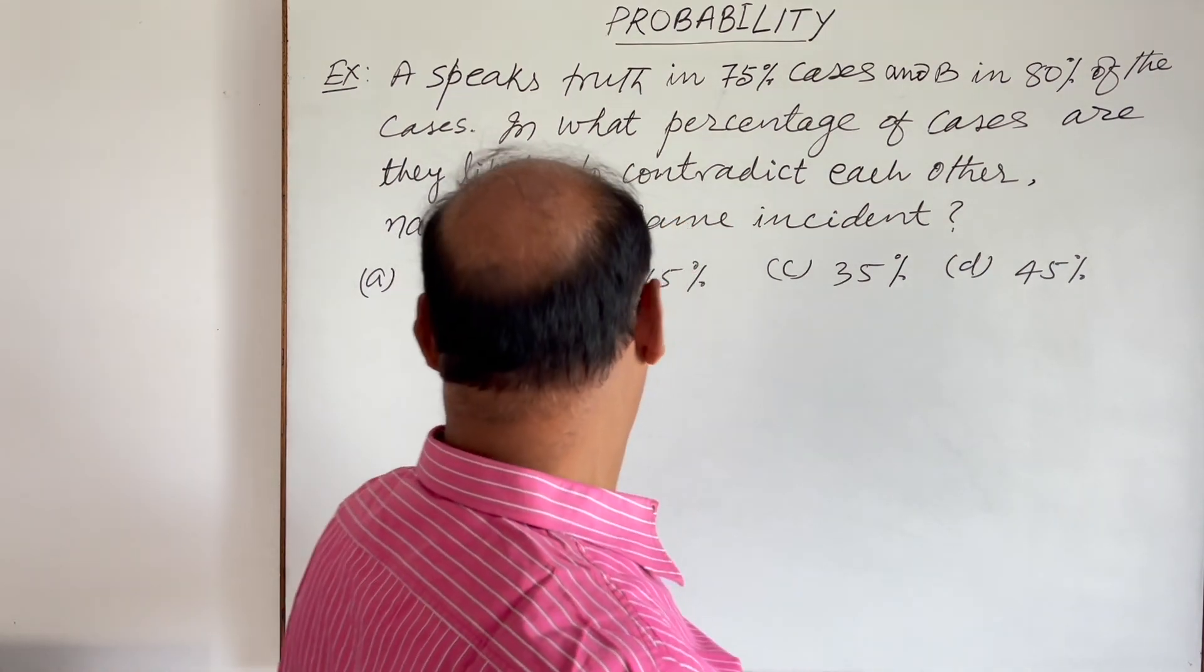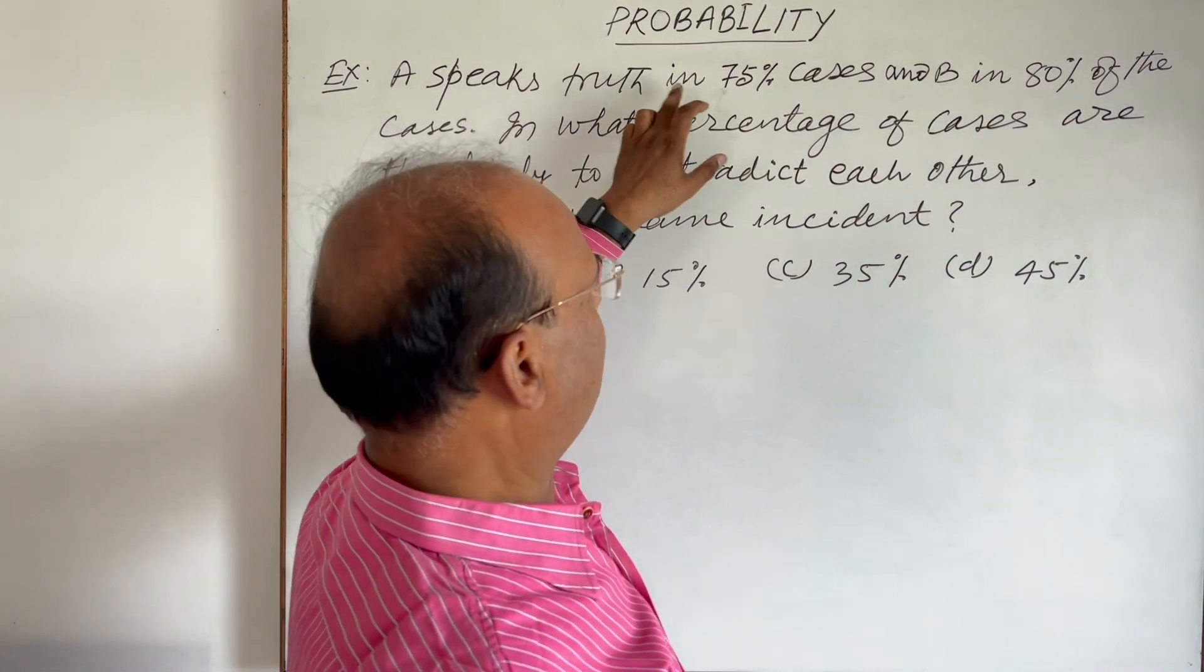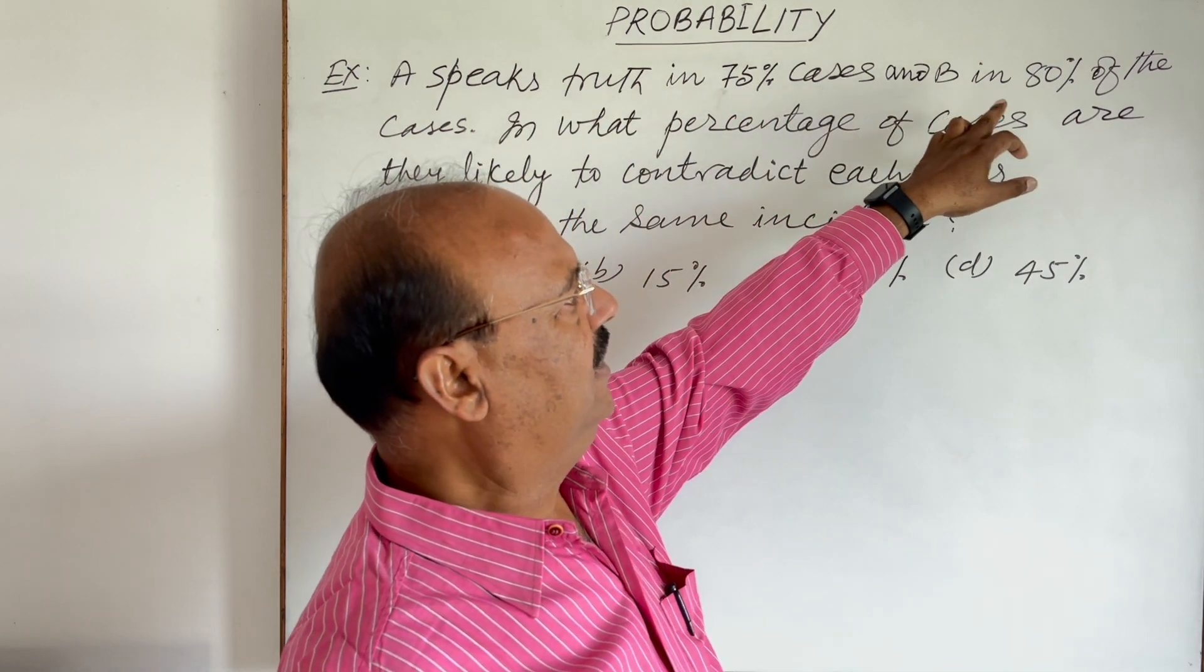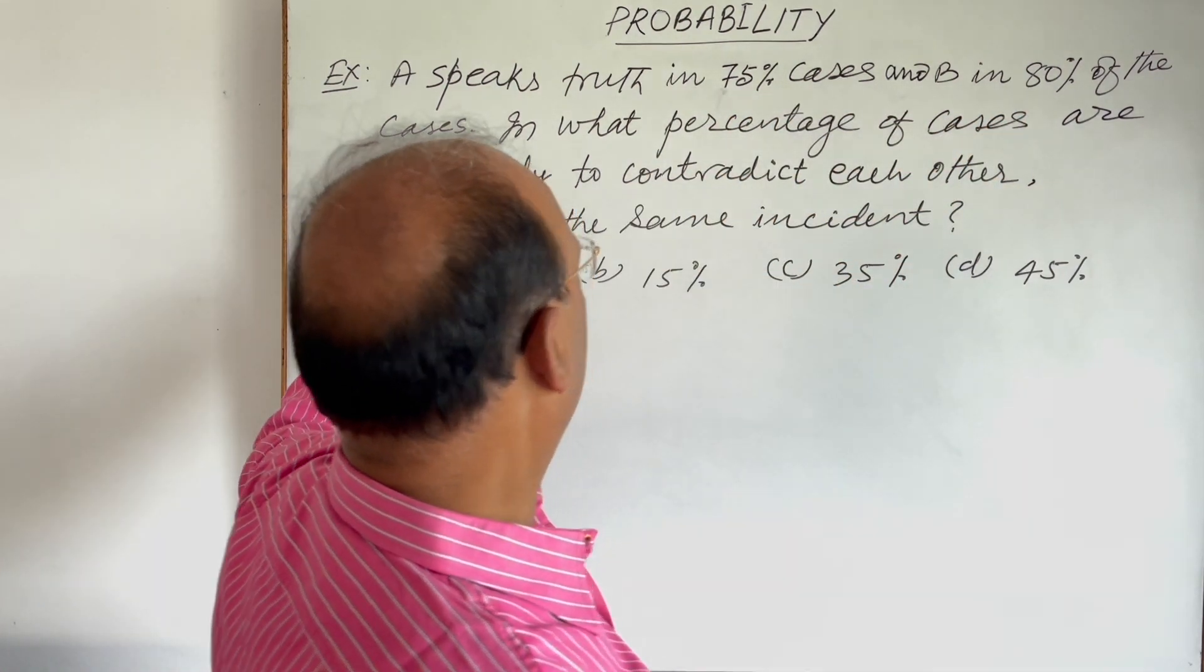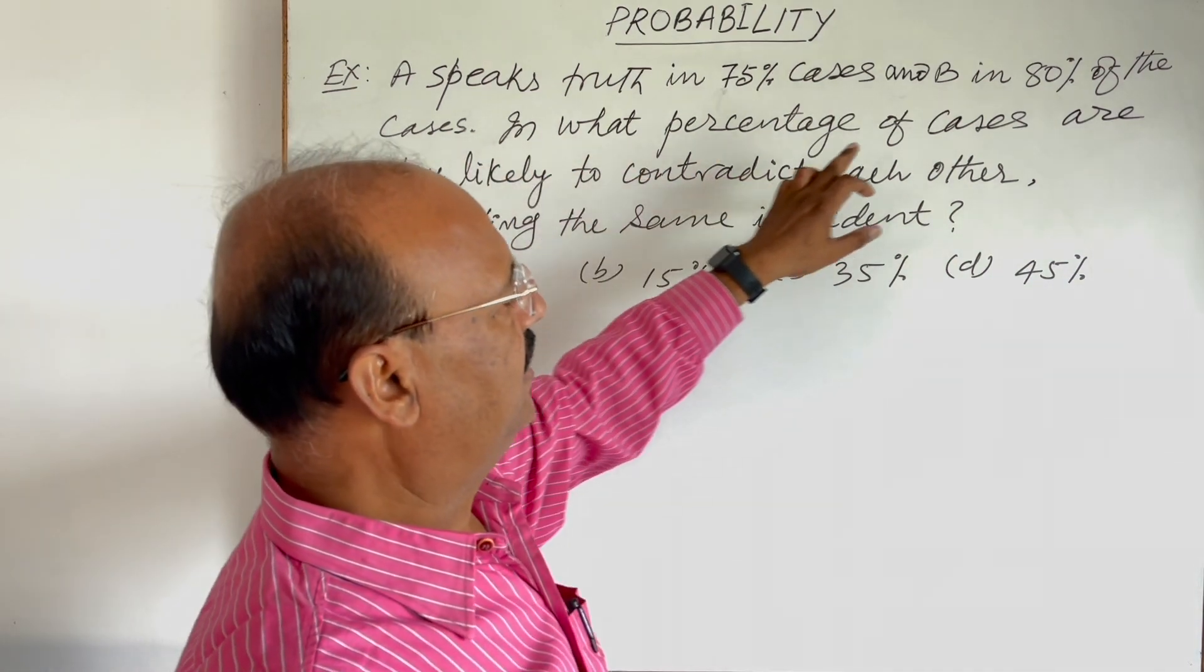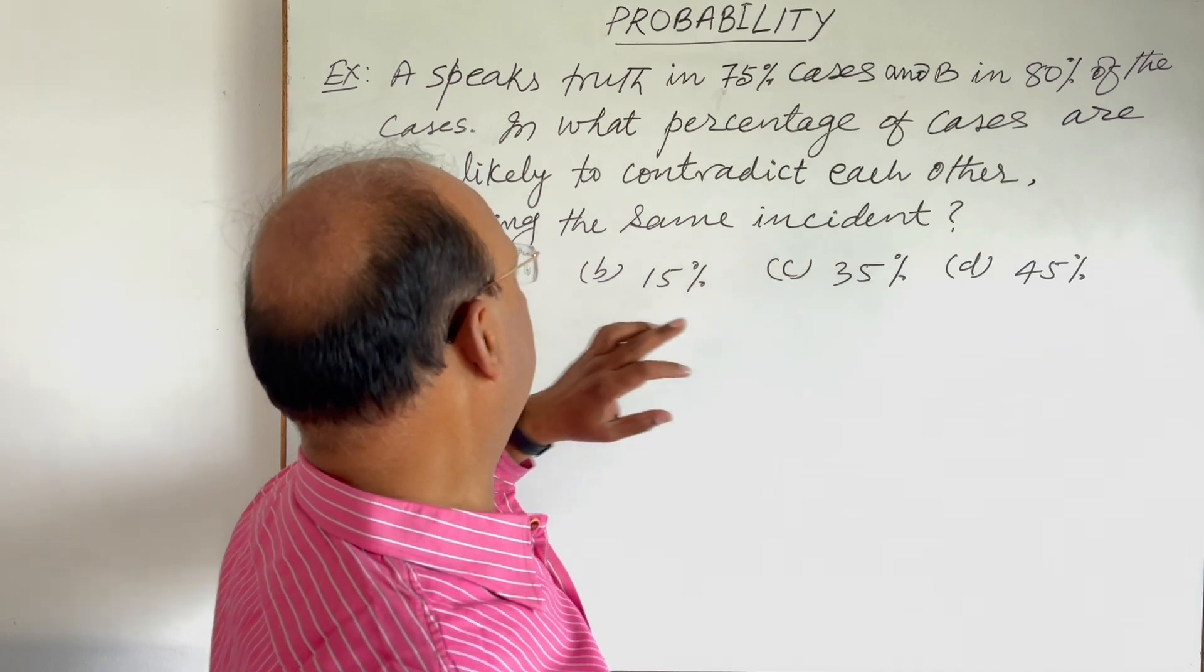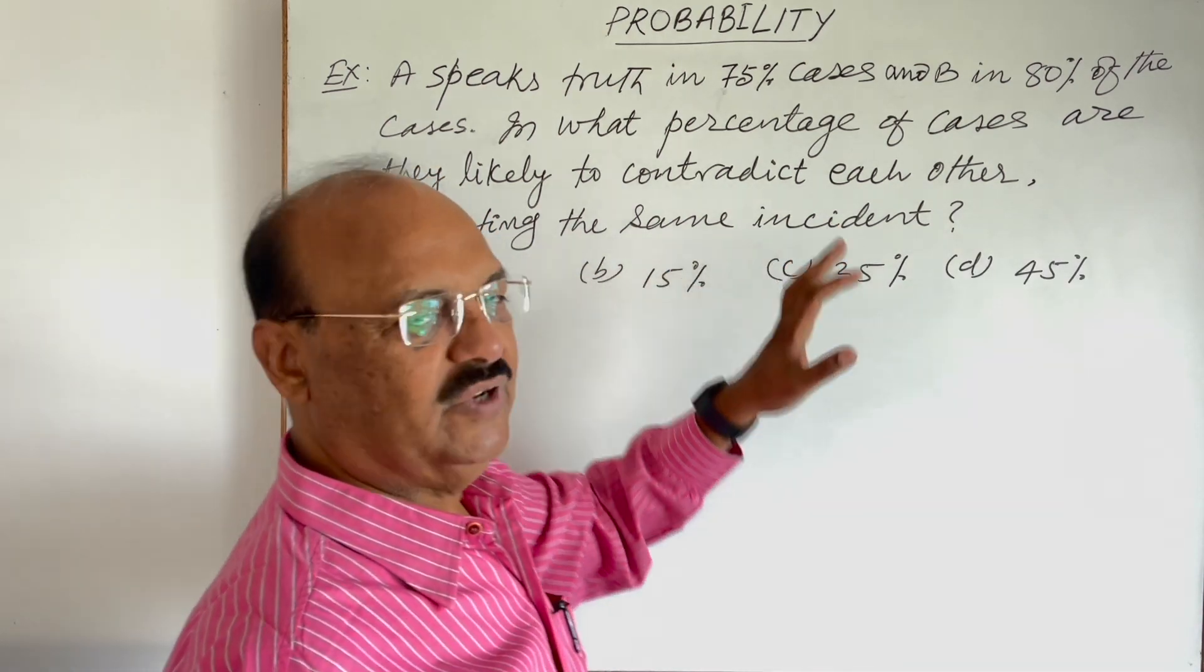Here question is: A speaks truth in 75% cases and B in 80% of the cases. In what percentage of cases are they likely to contradict each other, narrating the same incident?